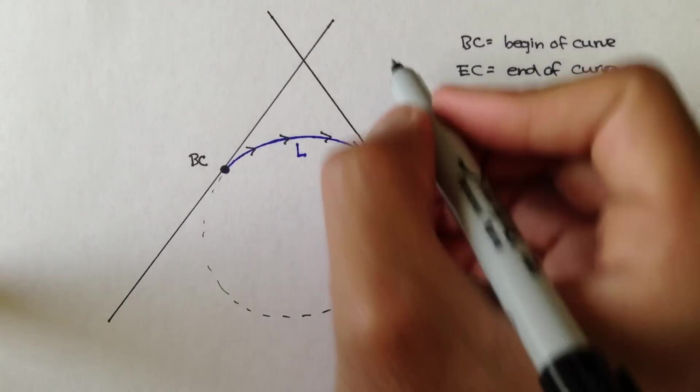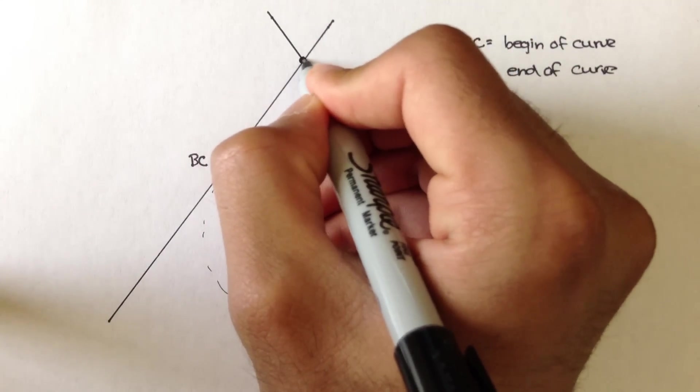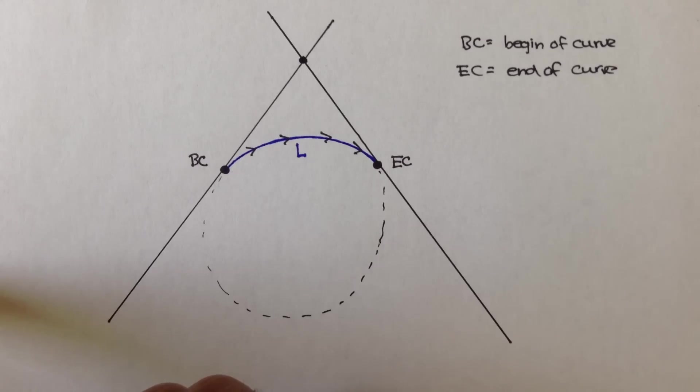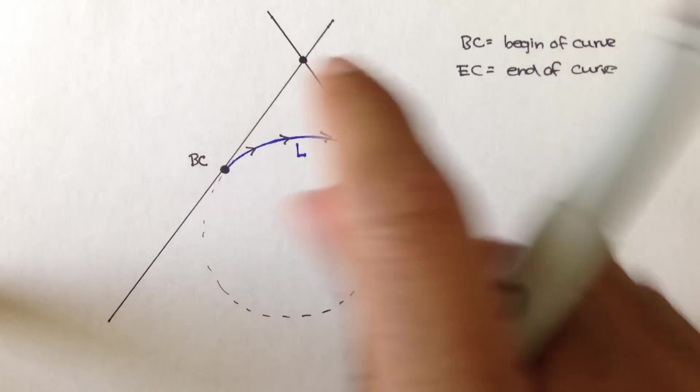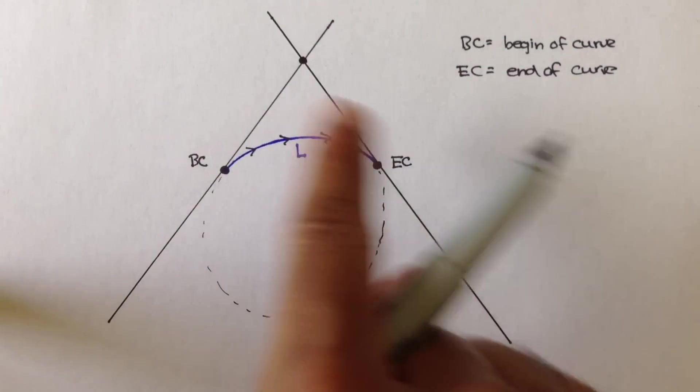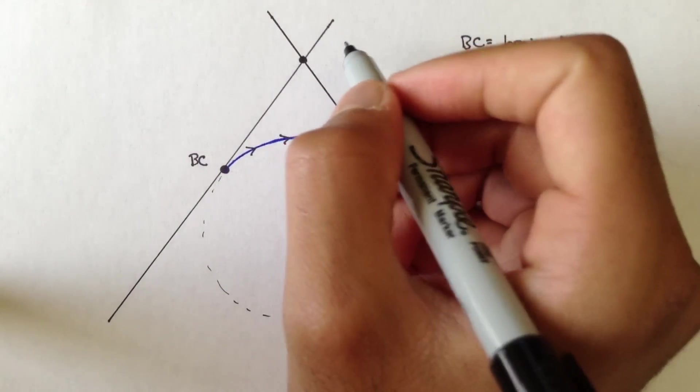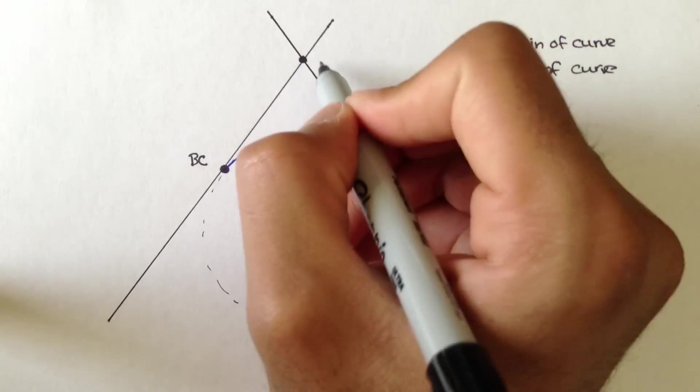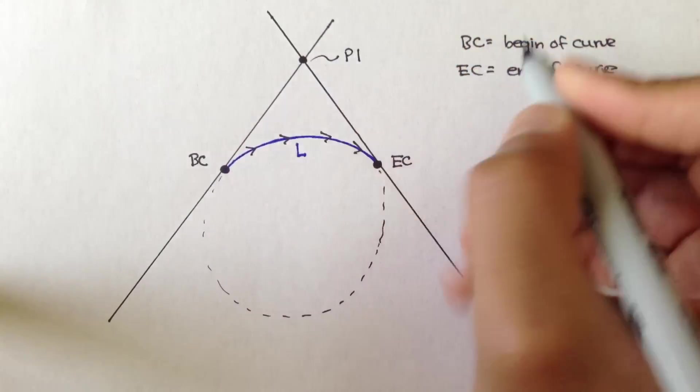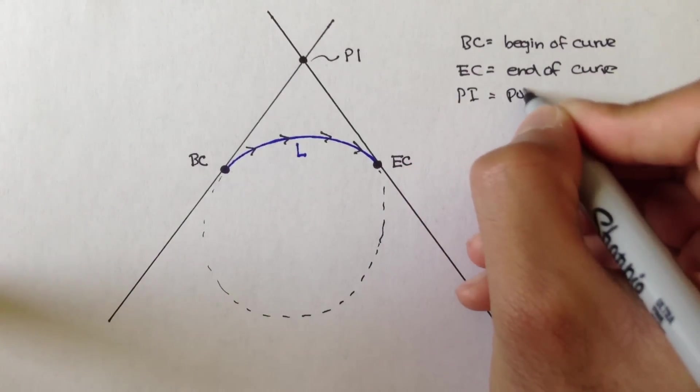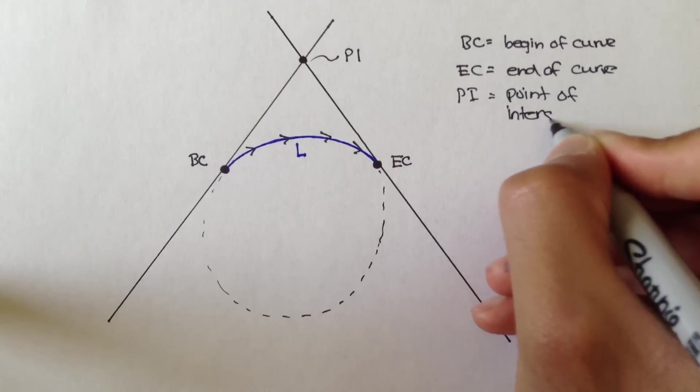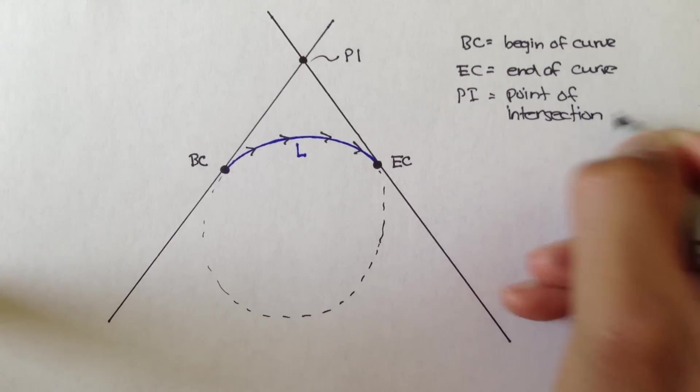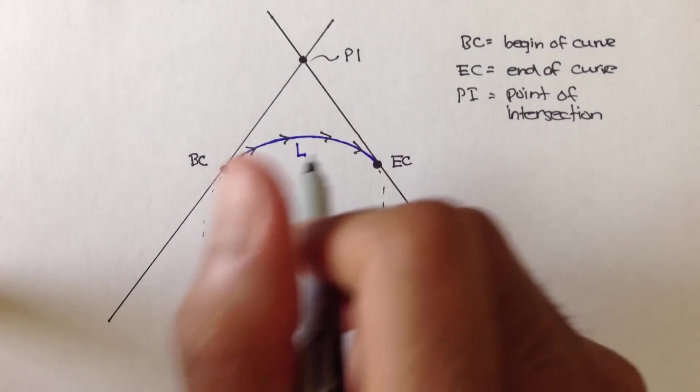Now, the point where these two tangents intersect above the curve. And remember, these are horizontal curves. So you're a bird, you're looking down, and you see this curve. Horizontal curves. This is called the PI. PI stands for point of intersection. It's the point of intersection of these two tangents.